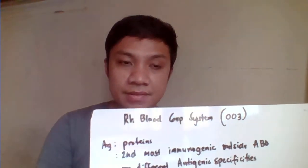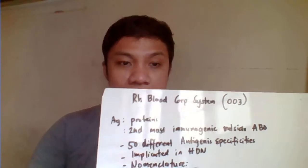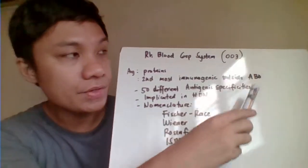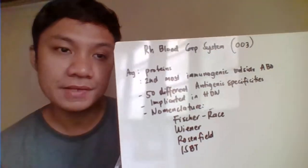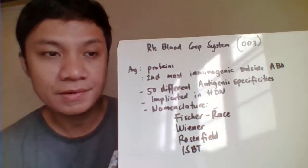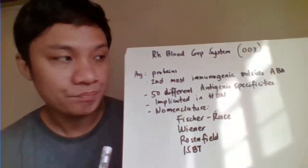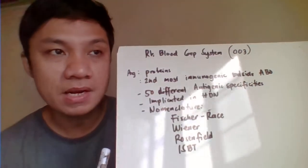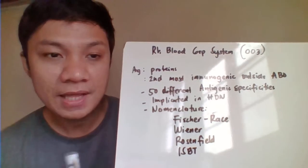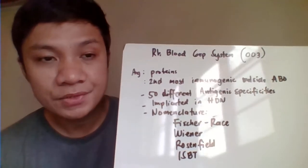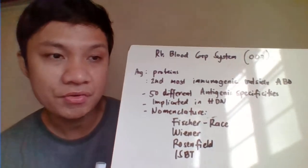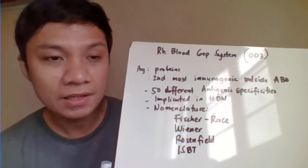We're going to discuss the RH blood group system. The RH blood group system has the 003 ISBT classification number, or the International Society for Blood Transfusion classification number. We consider the RH blood group system as the second most important blood group system after the ABO blood group system. It's also considered the second most immunogenic after the ABO blood group system.